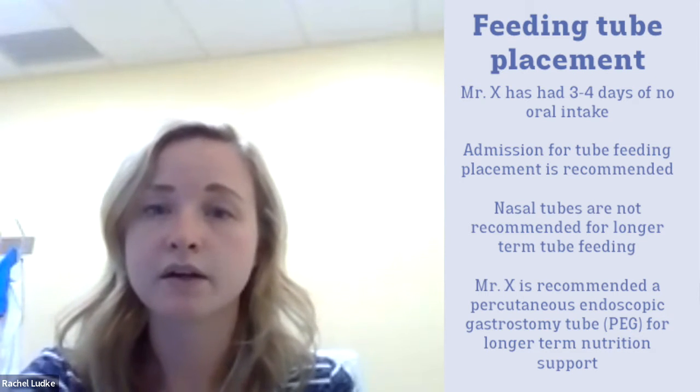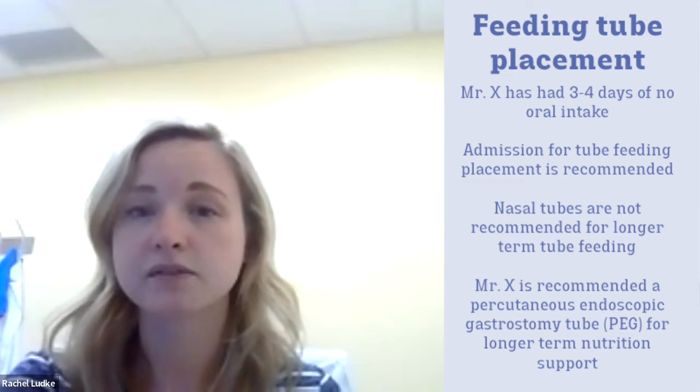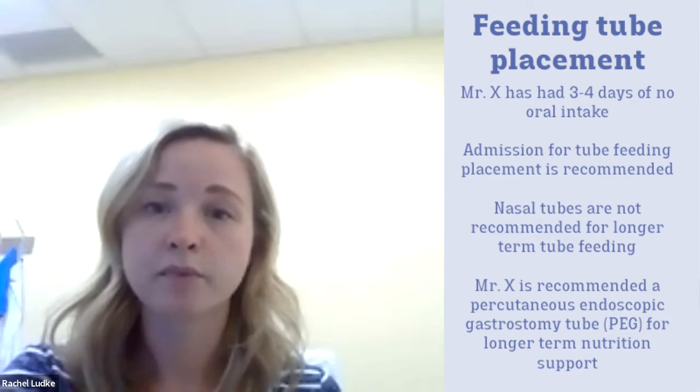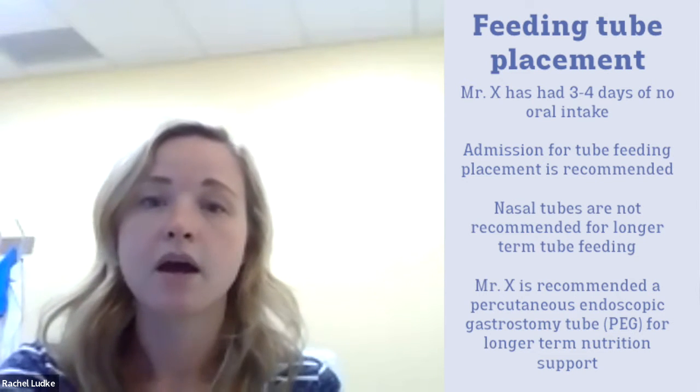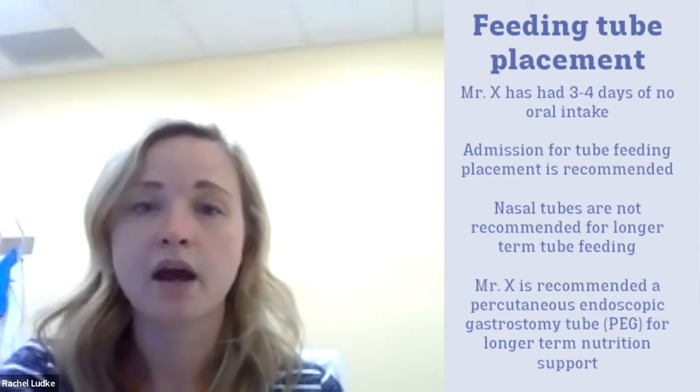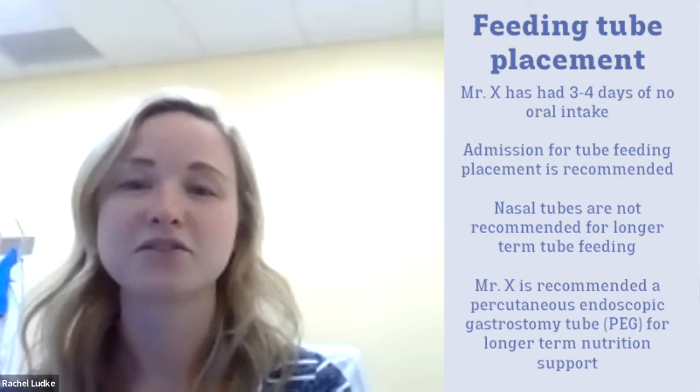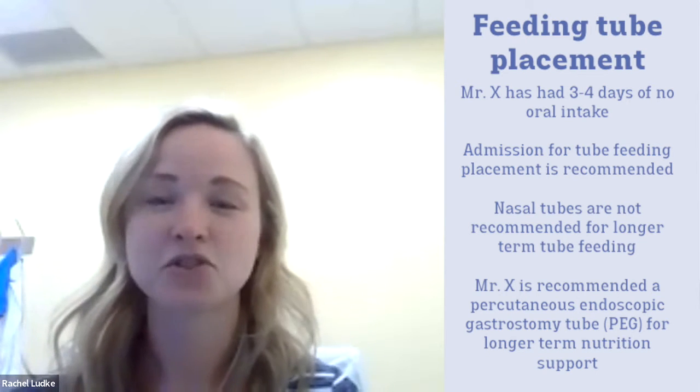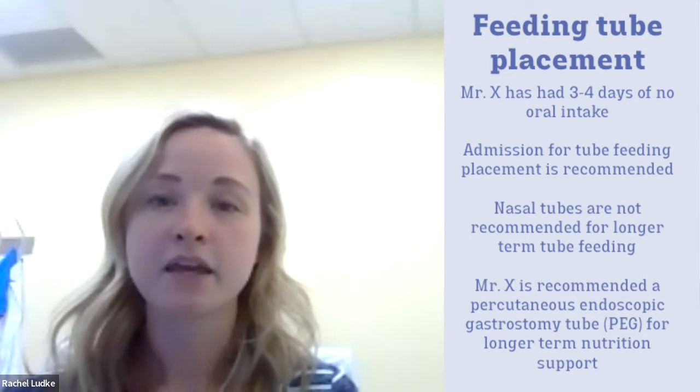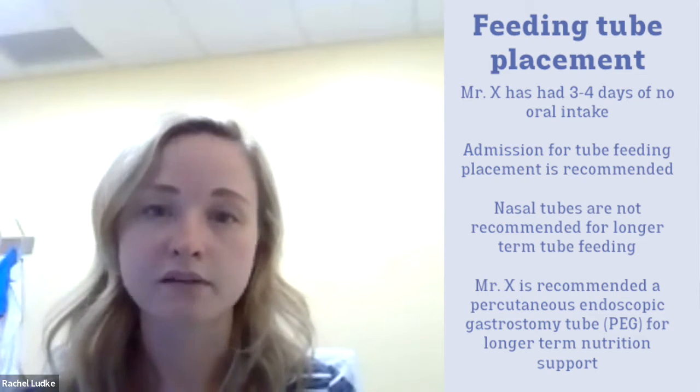First, we are going to decide what kind of tube placement is most appropriate for Mr. X. When deciding what kind of tube a patient should receive, we want to look at a couple of things. First, we want to determine how long Mr. X will need nutrition support for. Generally, we can do nasal gastric or nasal jejunal feedings if a patient is anticipated to need nutrition support for about four weeks or less.